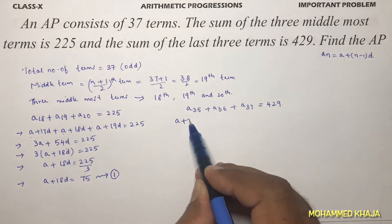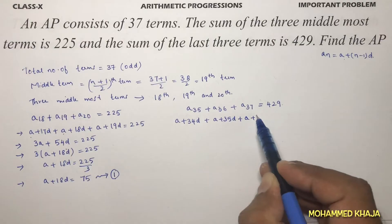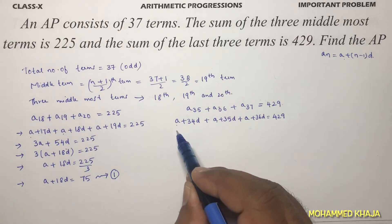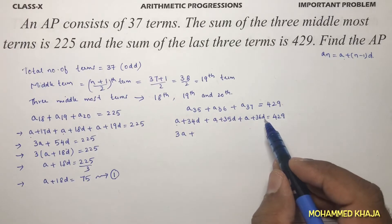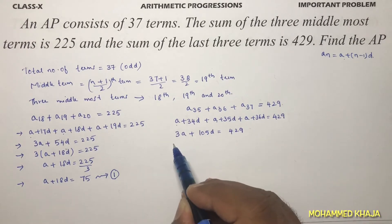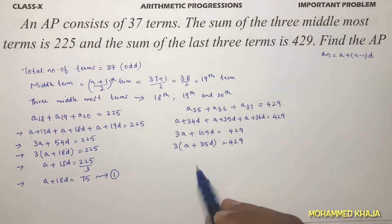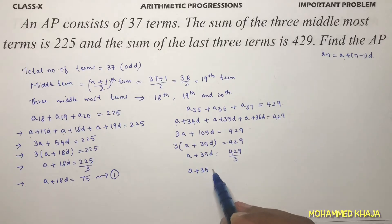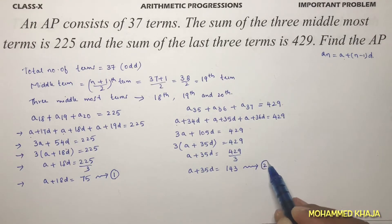For the last three terms: a35 = a + 34d, a36 = a + 35d, a37 = a + 36d, and their sum is 429. Adding gives 3a + (34 + 35 + 36)d = 3a + 105d = 429. Taking 3 common: a + 35d = 429/3 = 143. This is Equation 2.